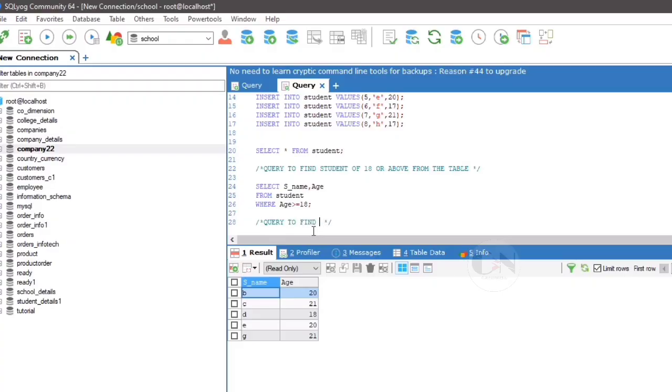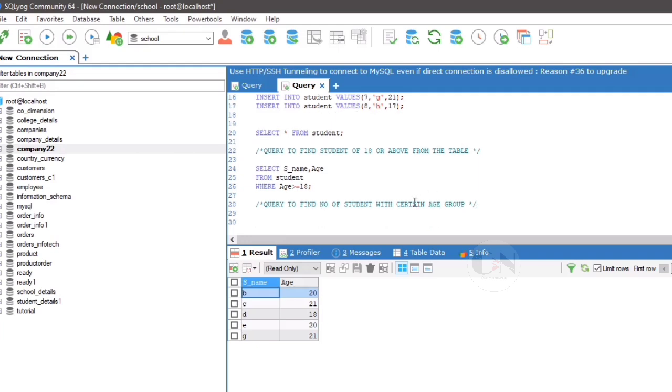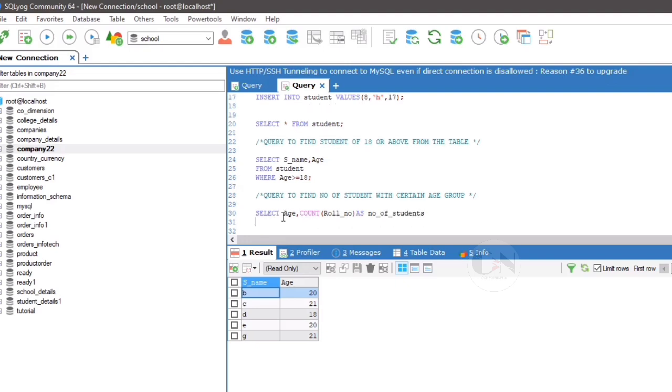Second query is query to find number of students with certain age group. So here is the application of having clause along with the group by clause. So the query will be select age comma count within bracket roll number as number of students from student group by age. Run the query and see the result.